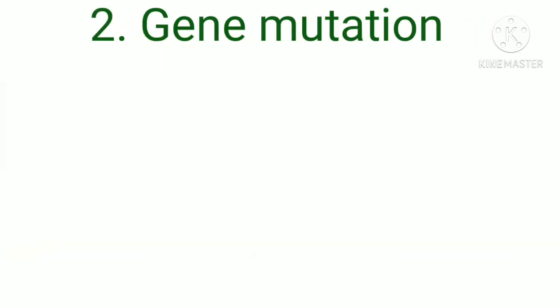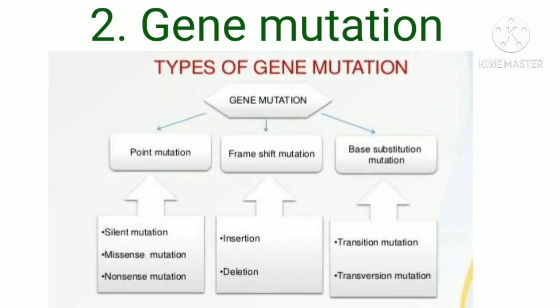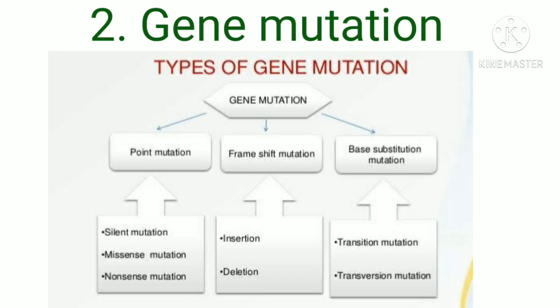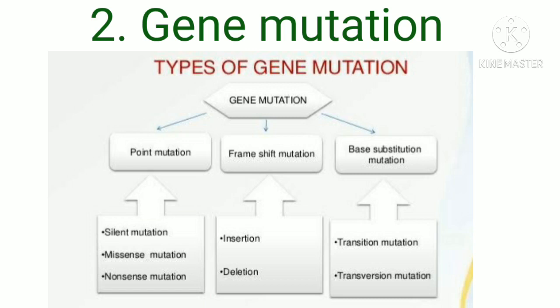The second type of mutation is gene mutation. There are three types of gene mutation: point mutation, frameshift mutation, and base substitution mutation. Point mutation is categorized as silent mutation, missense mutation, and nonsense mutation, whereas frameshift mutation is classified as insertion and deletion. Base substitution mutation is classified as transition mutation and transversion mutation.